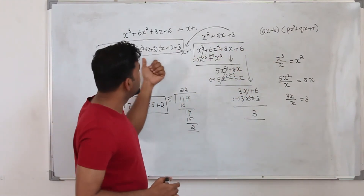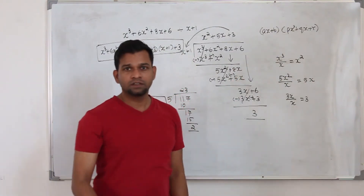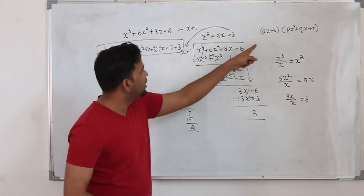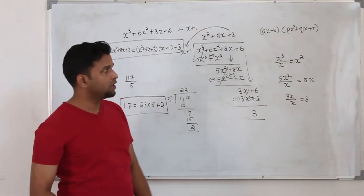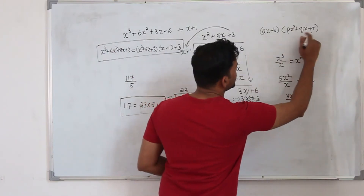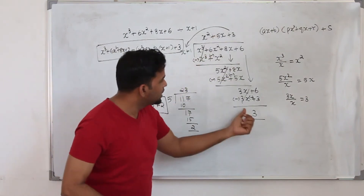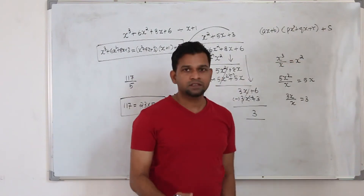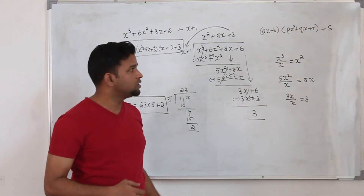They basically want you to write the expression as divisor times quotient. Apply the long division method and put the quotient and divisor in multiplication. If the question says write the polynomial in the form plus s, that tells us you will get a non-zero remainder — put the number as s. That's what the long division method is.